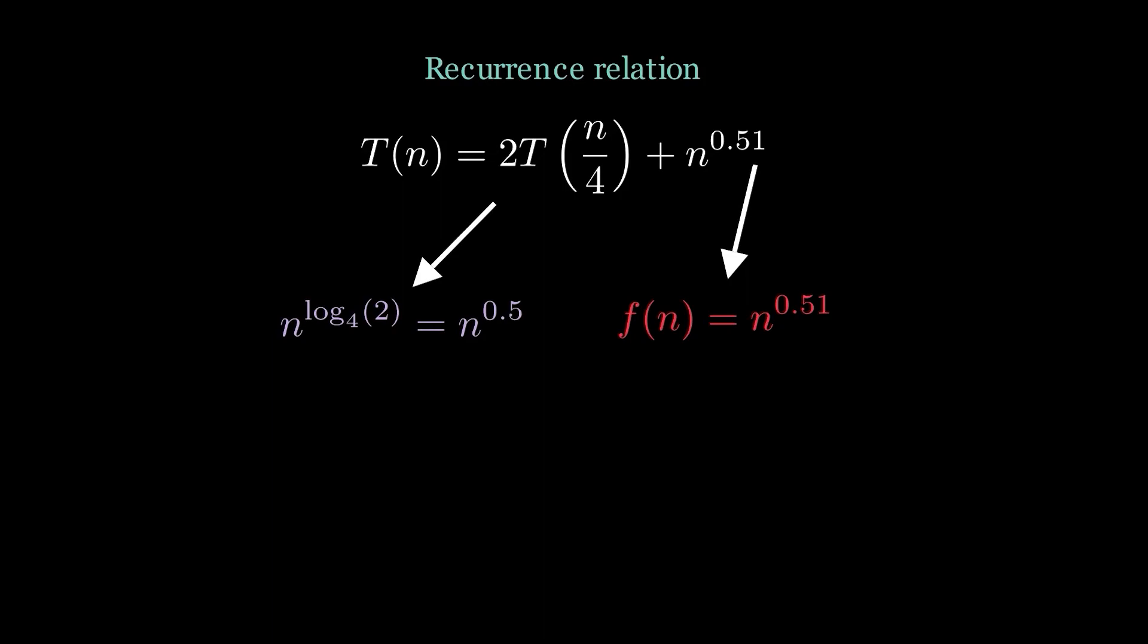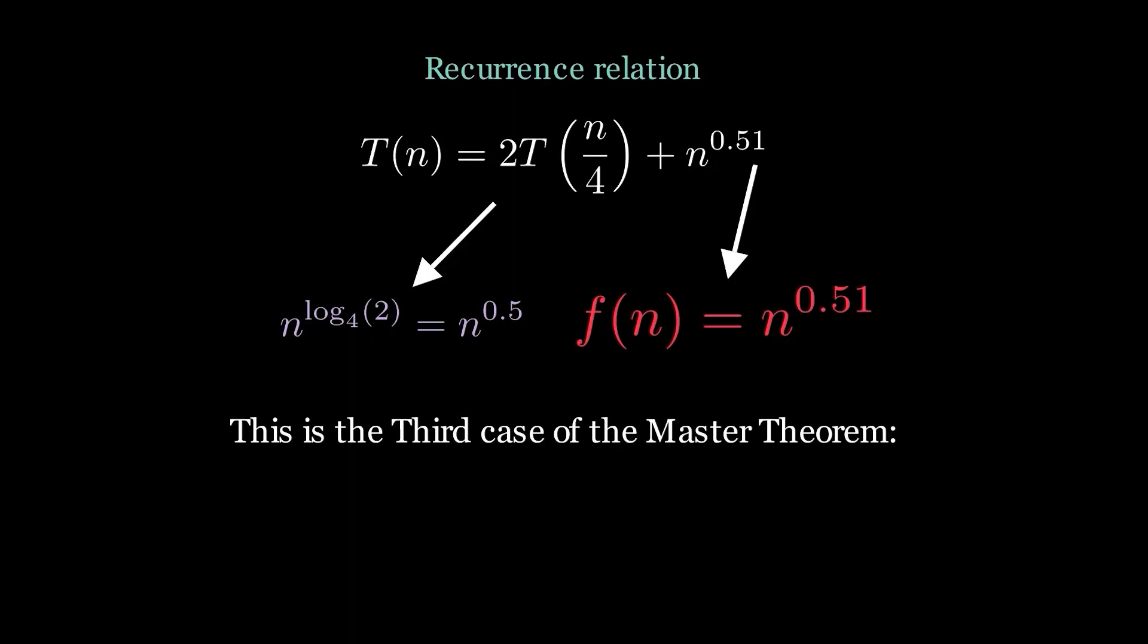Now in one last example, the non-recursive part will grow faster than the recursive part. It might look that the difference is small, but for a very large value of n, it will outperform the recursive part faster. It is the case 3 relation. So we have to check for the regularity condition, which it satisfies. Now applying the third case, the complexity turns out to be Θ(n^0.51).